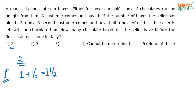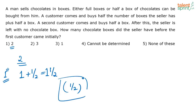What is remaining with the seller? He had two chocolate boxes total, out of which 1.5 have been sold, so he has only half a box remaining. Now a second customer comes and buys half a box.